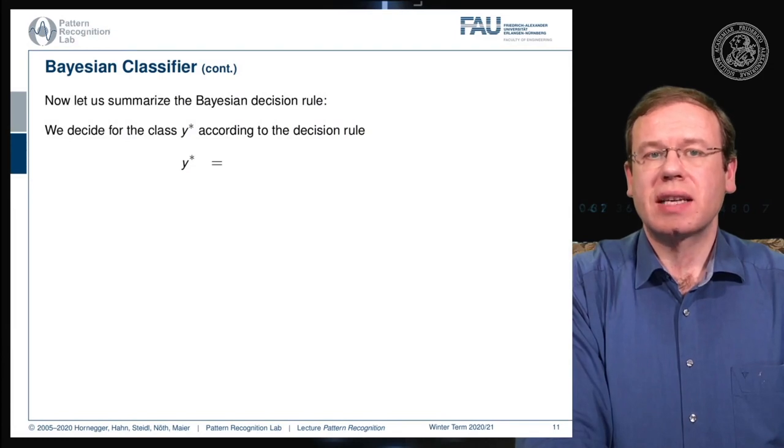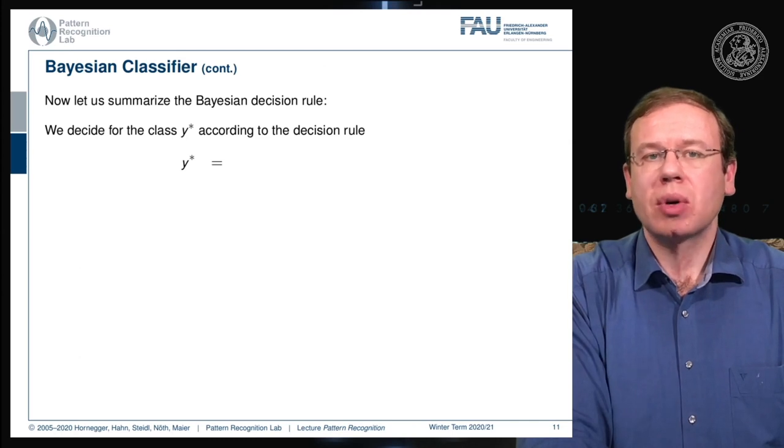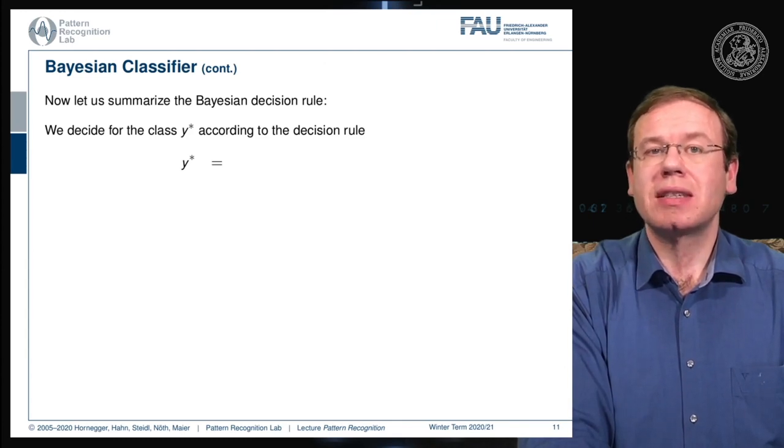The Bayesian classifier can now be summarized and constructed via the Bayesian decision rule. We essentially want to decide for the optimal class that is given here by y* and y* is determined by the decision rule.